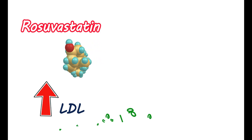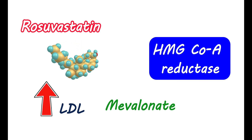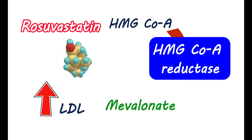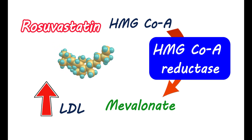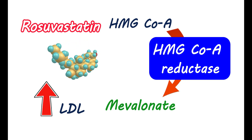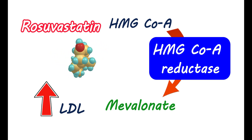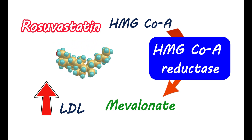Rosuvastatin is a lipid-lowering medication that helps reduce high lipid levels in the body. Elevated levels of LDL cholesterol in the blood pose a high risk for heart disease. Rosuvastatin reduces LDL levels by reducing cholesterol synthesis in the liver. Cholesterol is synthesized through a substance called mevalonate. This pathway is controlled by the enzyme HMG-CoA reductase, which converts HMG-CoA to mevalonate, subsequently converted into cholesterol in the liver. The conversion to mevalonate is the rate-limiting step that controls how much cholesterol is synthesized.